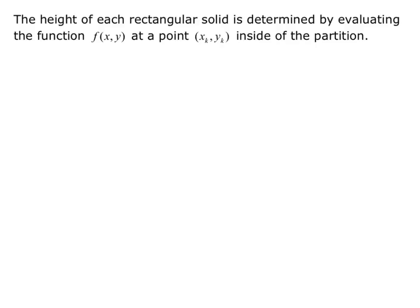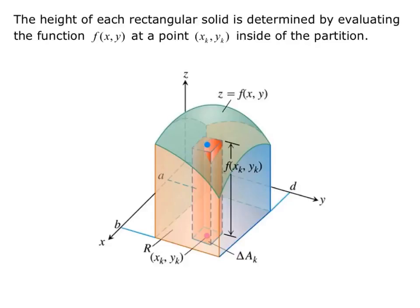The height of each rectangular solid is determined by evaluating the function f(x,y) at a point (x_k, y_k) inside the partition. We have this surface z equals f(x,y), and we have all of these little rectangular solids whose base is the Δa_k, and whose height is f(x_k, y_k). So the function evaluated at some point within that subinterval rectangle.